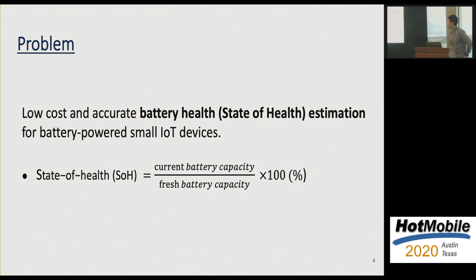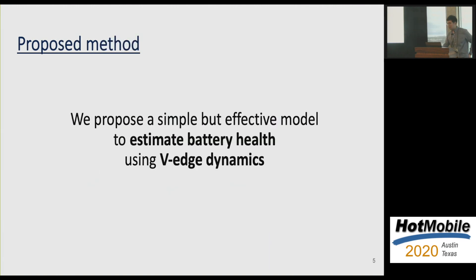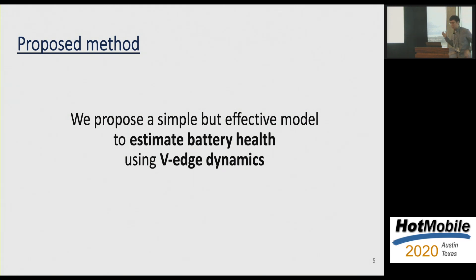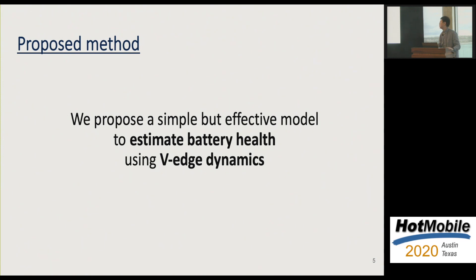The health of a battery is the ratio of the current battery capacity to the fresh battery capacity. To know the state of battery capacity, we focus on how to estimate battery capacity. We propose a simple but effective model to estimate battery health using voltage-drop (VH) dynamics without additional hardware and in a computationally cheap way.